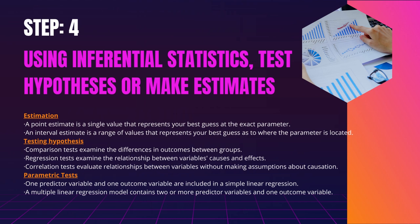Parametric tests. Based on sample data, parametric tests make powerful inferences about the population. However, certain assumptions must be met before they can be used, and only certain types of variables can be used. If your data contradicts these assumptions, you can use appropriate data transformations or alternative non-parametric tests. A regression model predicts how changes in a predictor variable affect changes in an outcome variable. One predictor variable and one outcome variable are included in a simple linear regression. A multiple linear regression model contains two or more predictor variables and one outcome variable.